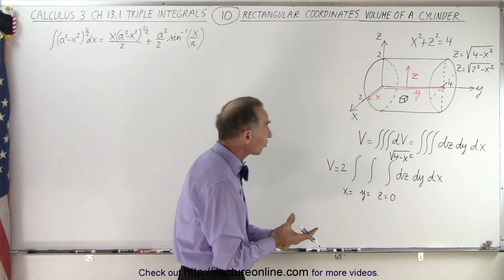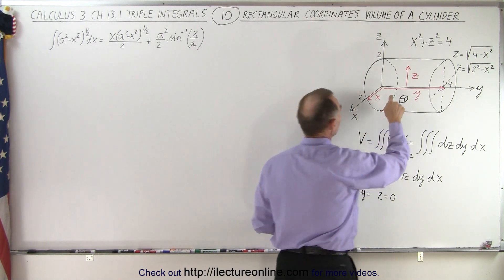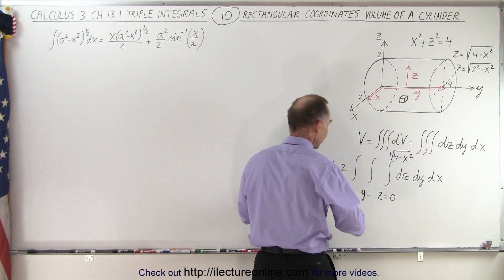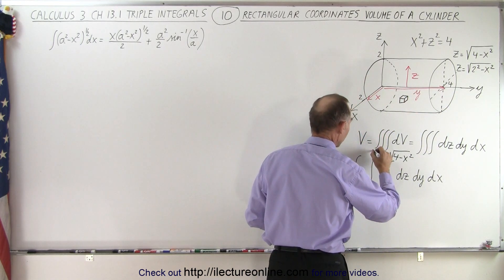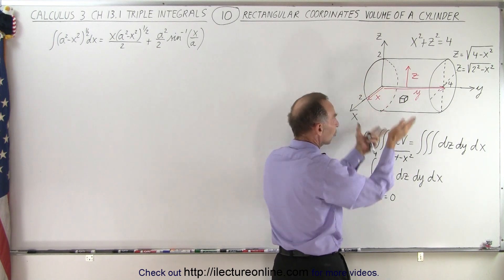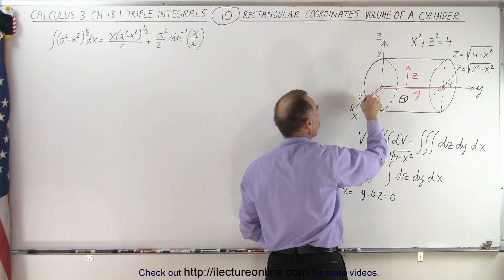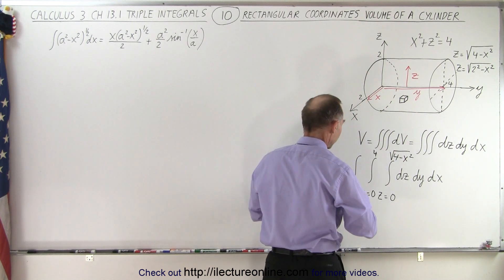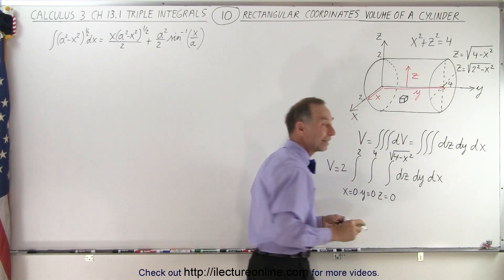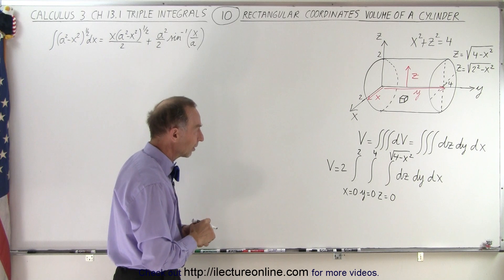Once we've limited ourselves with the surface, when we integrate in the y direction we go all the way from 0 to 4 — there's no restriction there at all. In the x direction, since we already limit ourselves by the surface, we integrate from 0 to 2, the maximum value of x. So only the z limit is a function of another variable; the others are constant limits.